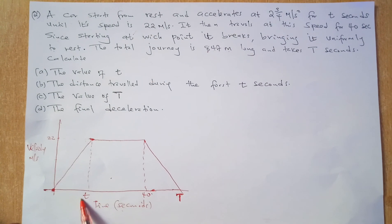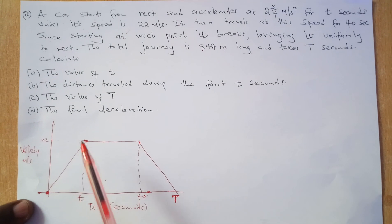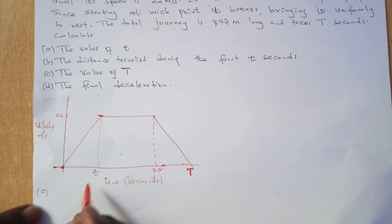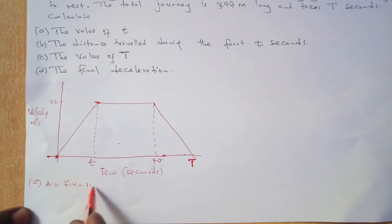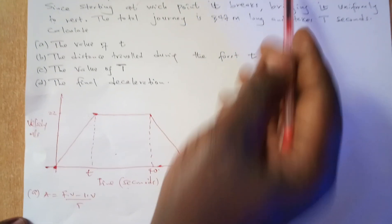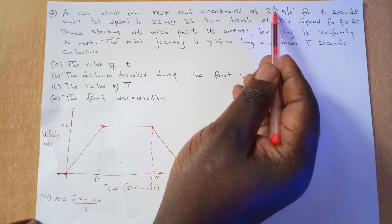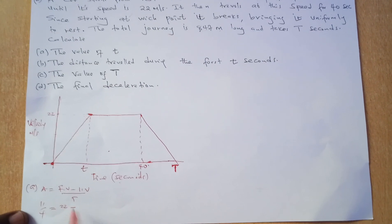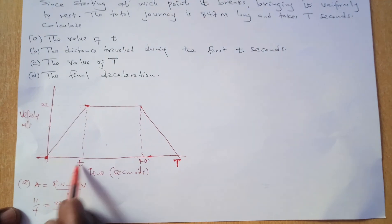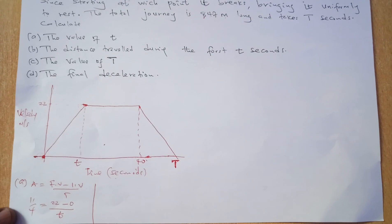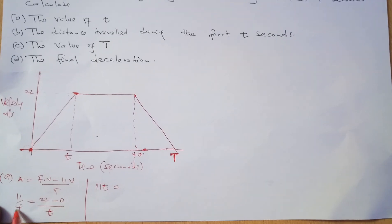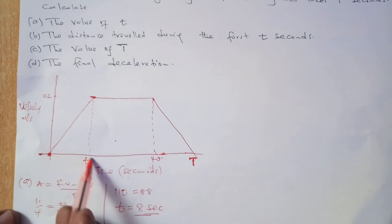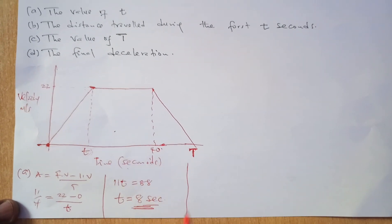Part a asks for the value of small t, which relates only to the acceleration phase. Using acceleration equals final velocity minus initial velocity over time: acceleration is 2¾ or 11/4, final velocity is 22, initial velocity is 0, and time is t. Cross-multiplying gives 11t equals 88, so t equals 8 seconds.